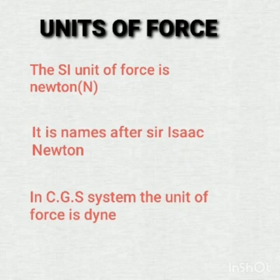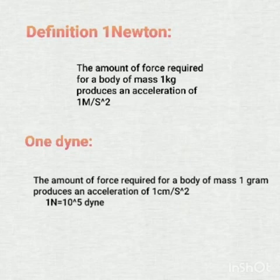This is very important because we have to follow SI rules and regulations. In the SI system, the unit of force is Newton. In the CGS system, the unit of force is Dyne. One Newton is the amount of force required for a body of mass 1 kg to produce an acceleration of 1 m per second square. One Dyne is defined as the amount of force required for a body of mass 1 gram to produce an acceleration of 1 cm per second square. In the CGS system, distance is measured in centimeter and mass is measured in gram.